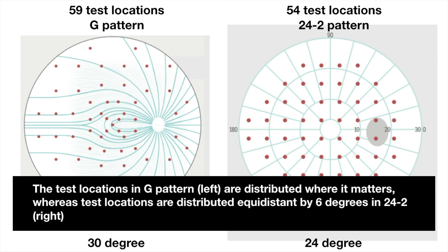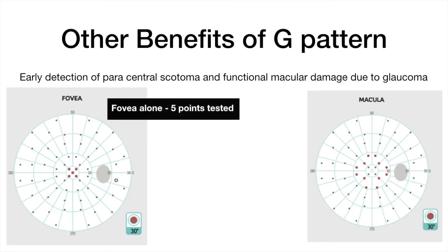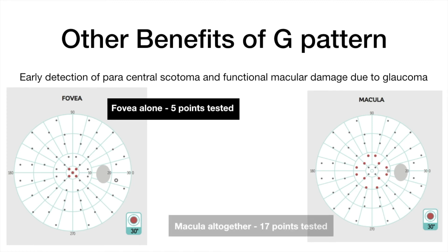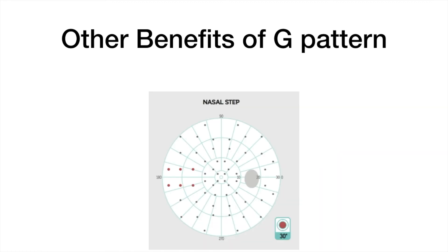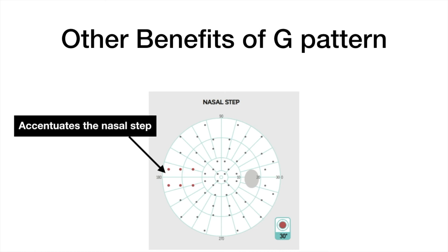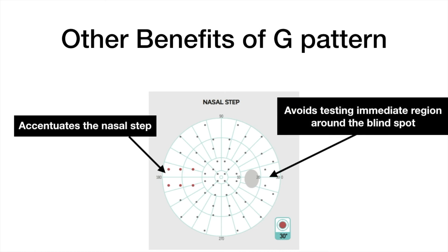G-pattern detects paracentral scotoma very early, as within the fovea alone 5 points are tested, and within the macula altogether 17 points are tested. G-pattern also accentuates the nasal step and avoids testing the immediate region around the blind spot. It is functionally specific, saving time.